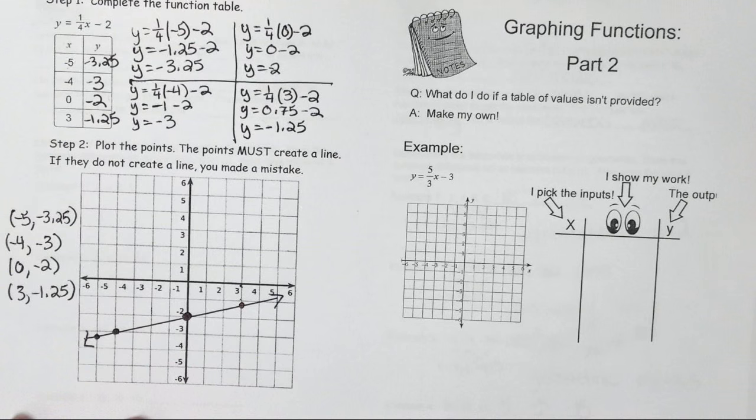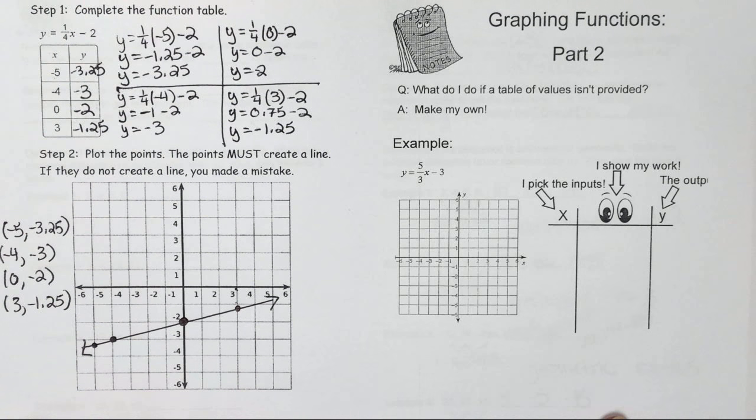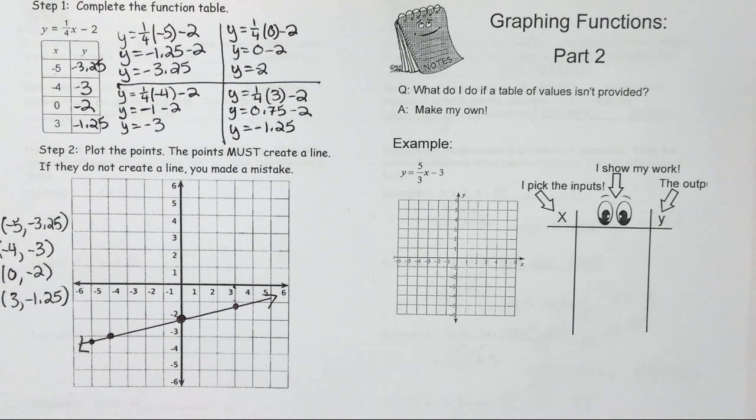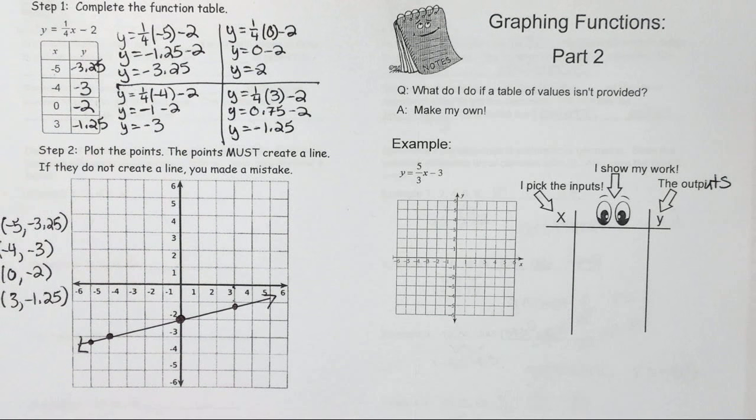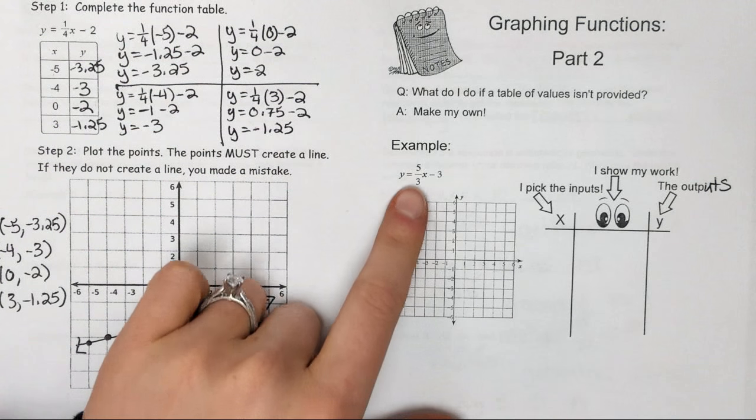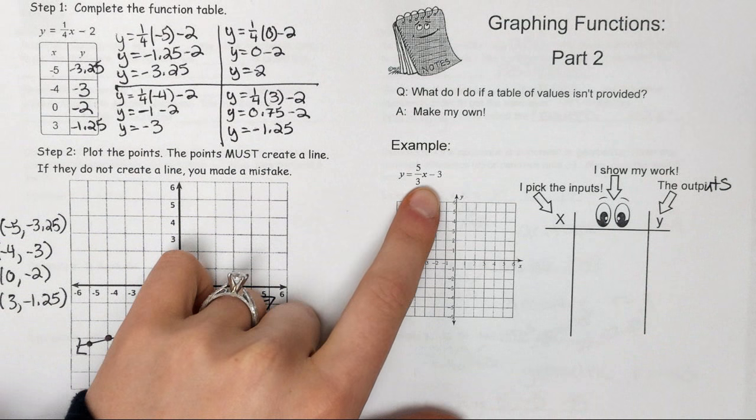Second example: what do I do if a table of values isn't provided? The answer is you make your own. So you pick the input, you show your work, and you determine the output. My rule here is y equals 5/3x minus 3.